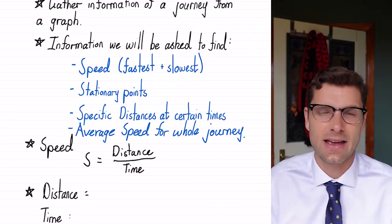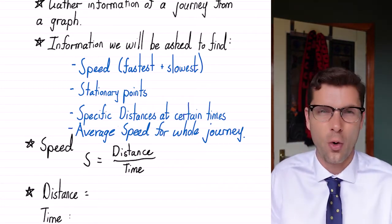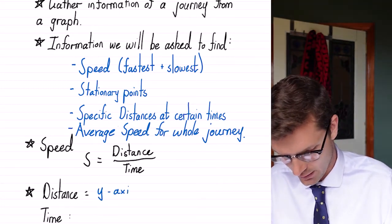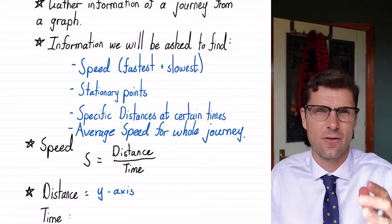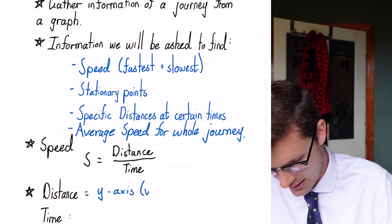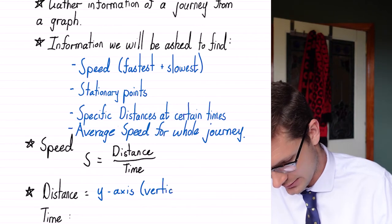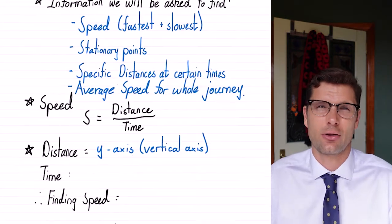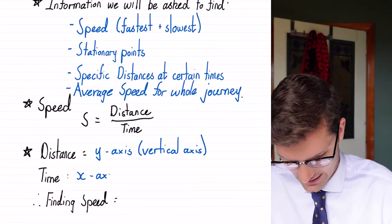And on our graphs for these ones, distance is always going to be the y-axis. Y-axis is vertical, so up and down. So this is our vertical axis. Time is always going to go across the bottom, which is our x-axis.